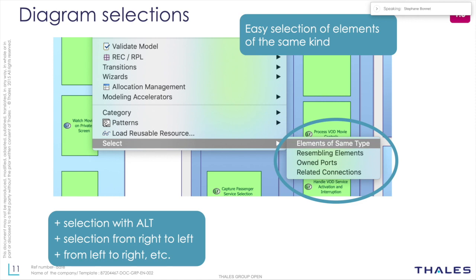Regarding diagram selection, don't forget that the behavior of the selection tool differs depending on modifier keys. When you select from right to left, anything you touch will be selected. When you select from left to right, you have to completely encompass the elements to select them.